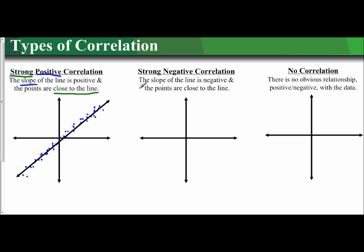So if I have a strong negative correlation, we do the same idea. This time, since it says negative, then the data I'm plotting will look similar to a negative line, a line with a negative slope.